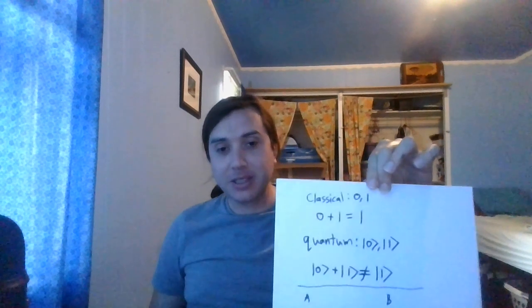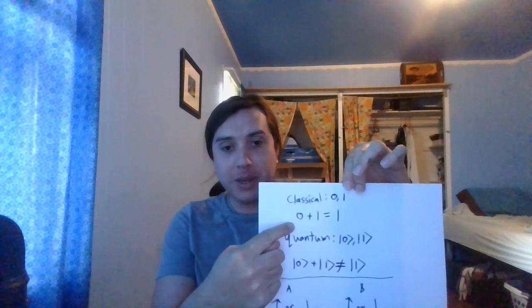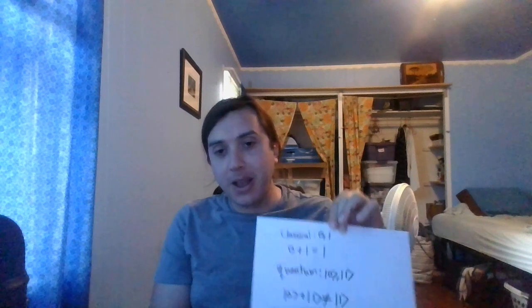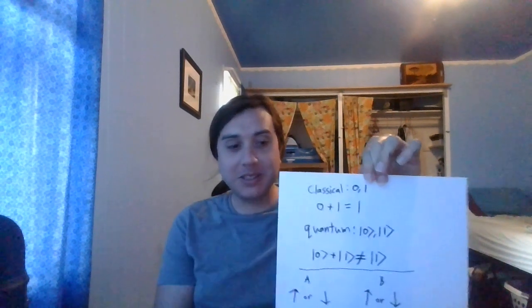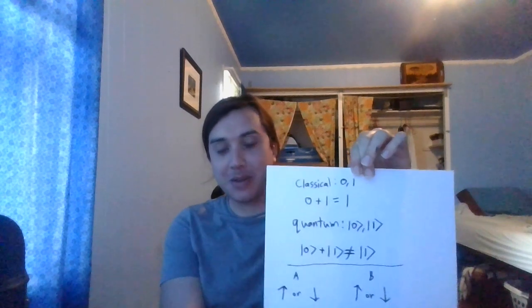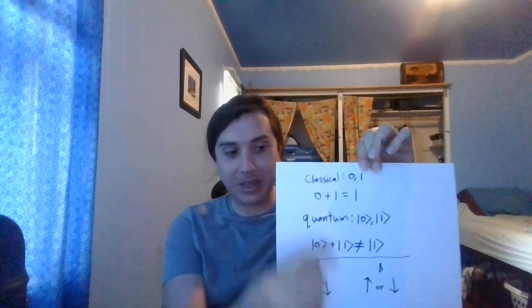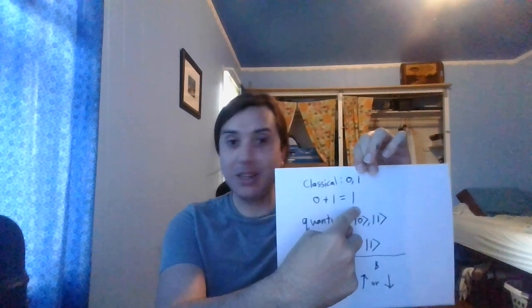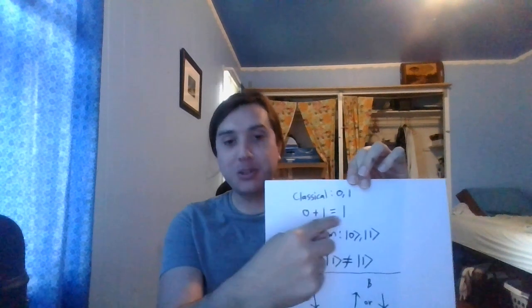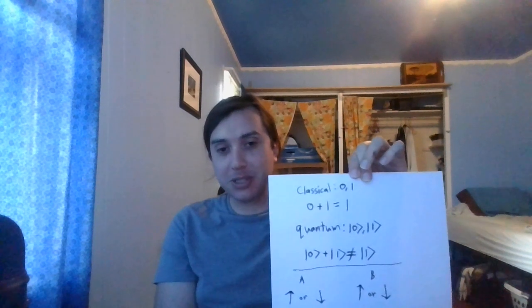To begin, let's think about the basic unit of computing, which is the bit — a zero or a one. And let's think about the simplest problem in addition and in all of mathematics, which is zero plus one. What is zero plus one? It's one. So in classical computing, that's what you have: just zero and one.